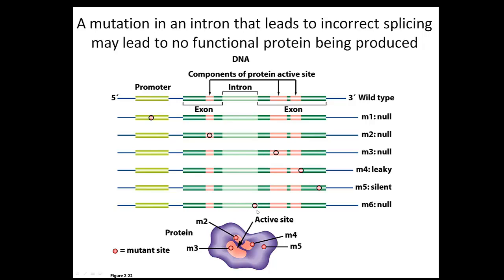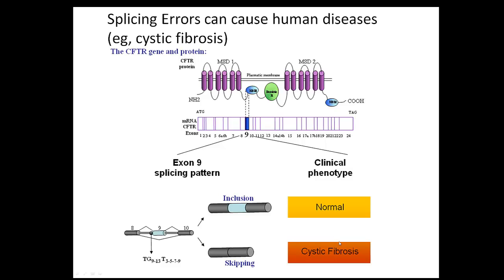A couple of things can happen when splicing signals are mutated. One possibility is that the sequence is not recognized as an intron and it stays in. Another possibility is that one of the exons gets cut out. This is what happens in the human disease cystic fibrosis. A mutation in the splice donor site of exon 9 means exon 9 is not recognized as an exon and gets spliced out, so the splice acceptor at the end of exon 8 gets joined to the splice donor at the beginning of exon 10. If exon 9 is skipped, you get cystic fibrosis; if splicing occurs correctly, you have a normal phenotype.